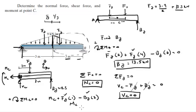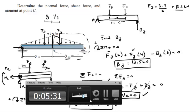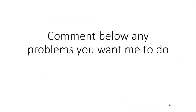When you plug them in and solve for the moment, you get that the moment is equal to 27 kilonewton-meters going clockwise. So final answer: normal force is zero, shear force is zero, and the moment at C is 27 kilonewton-meters clockwise. Please comment below if you want me to do any problems, and I'll be happy to help. Thank you.